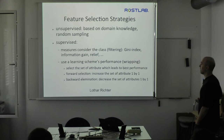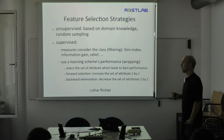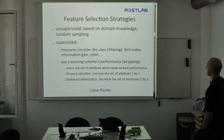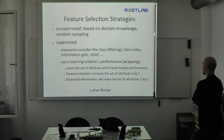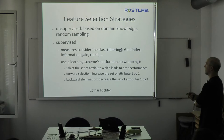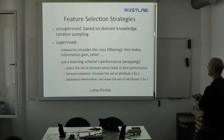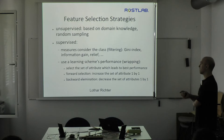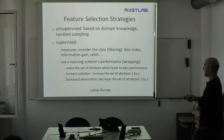Much more common is supervised feature selection: you pick features based on their influence on prediction performance. The more information a feature contains for prediction, the earlier you should pick it — this is also called filtering. Statistics like Gini index, information gain, and Relief calculate the coupling between an attribute and the class label. Alternatively, you can do wrapping, which uses the actual prediction performance of a machine learning scheme to determine whether a feature is useful or not.